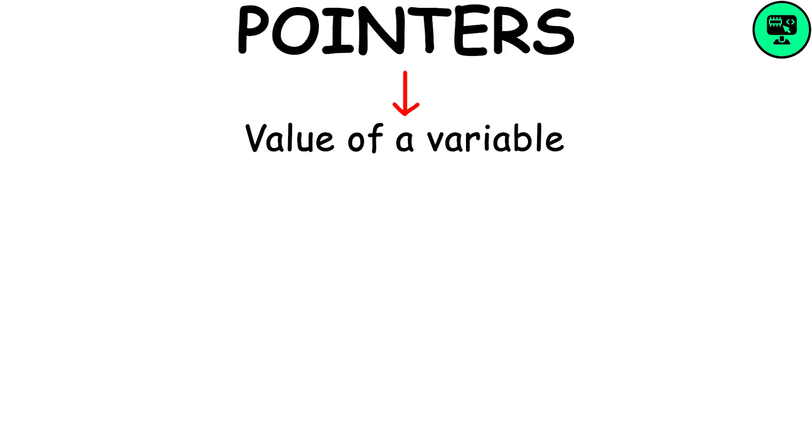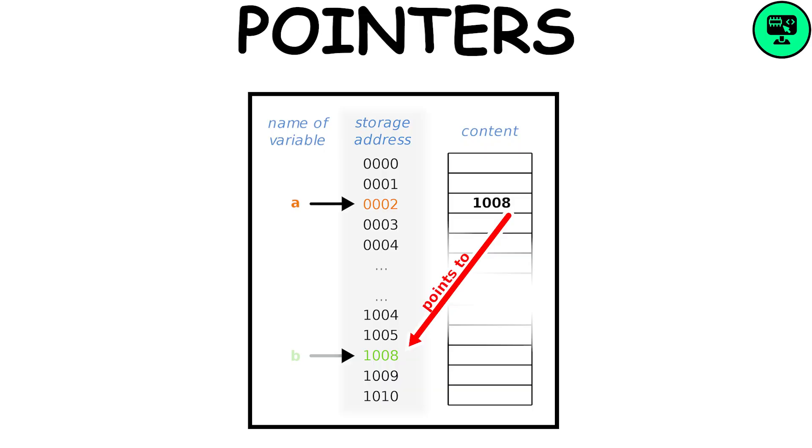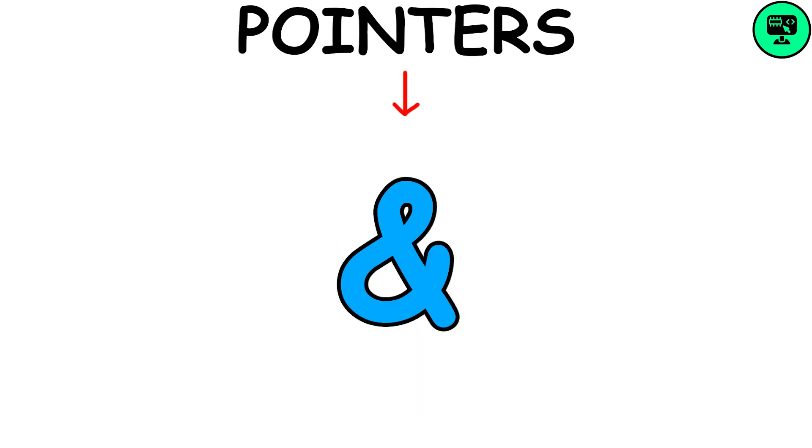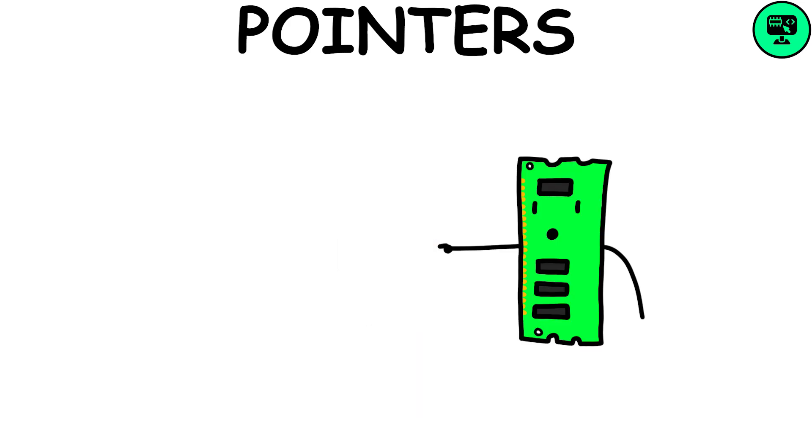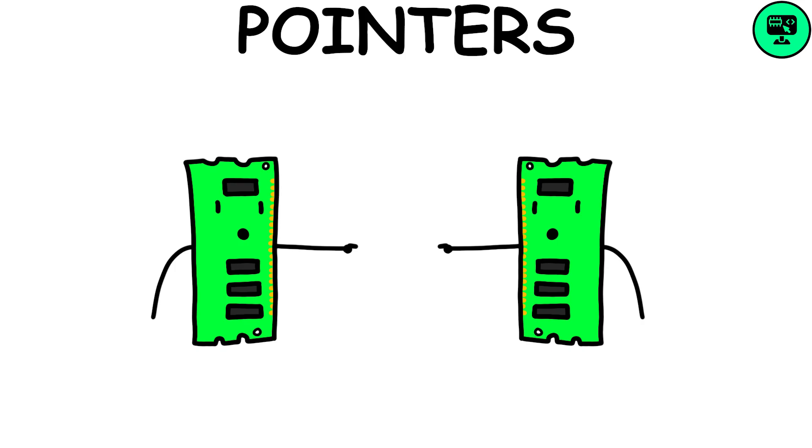The value of a variable is stored at a specific address in memory. Pointers are variables whose value is the memory address of another variable, denoted by an ampersand. Essentially, a pointer is a chunk of memory pointing to another chunk of memory.